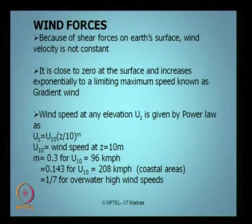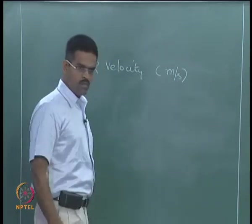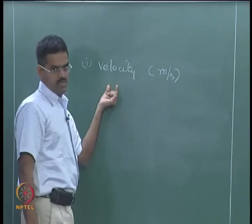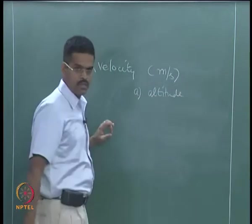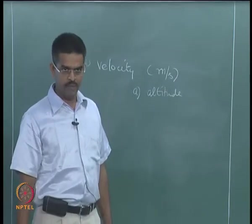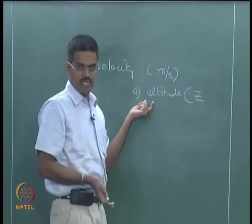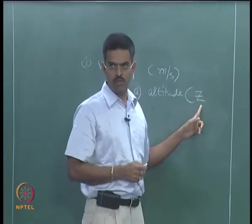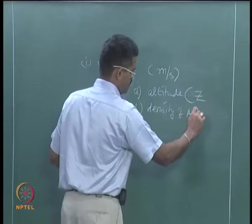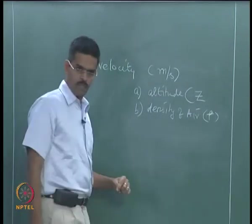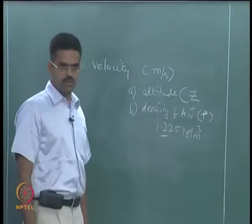What I want first is the velocity — in meters per second. Wind velocity depends on many factors. Number one, it depends on altitude — at what height you are looking at the velocity. As you go higher, velocity keeps on increasing — so there is a z variation along the vertical axis. Second, it depends on density of air, which we call rho, approximately 1.225 kg per cubic meter.